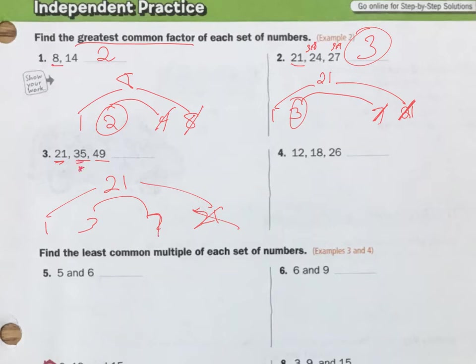So, I'm going to put a little mark right here. Now, does 7 go into 49? Yes. 7 times 7 is 49. 7 times 5 is 35. 7 times 3 is 21. 7 is my greatest common factor of these 3 numbers.